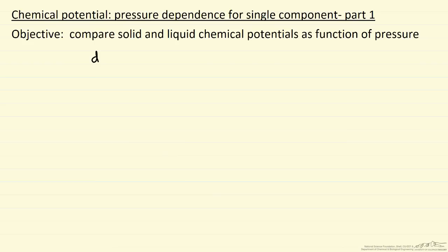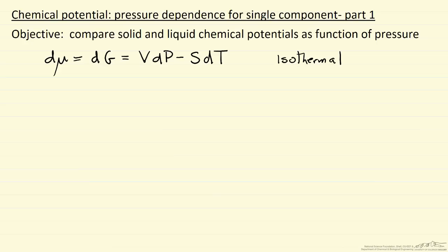The differential change in Gibbs free energy is related to the volume, differential pressure change, entropy, and temperature change. Here mu is the chemical potential, and this is true for a single component. We're going to look at constant temperature — an isothermal system — which means we set the entropy-temperature term to zero, and therefore the change in chemical potential is just volume times the change in pressure. Since volume is a positive number, this says the chemical potential increases as we raise the pressure.